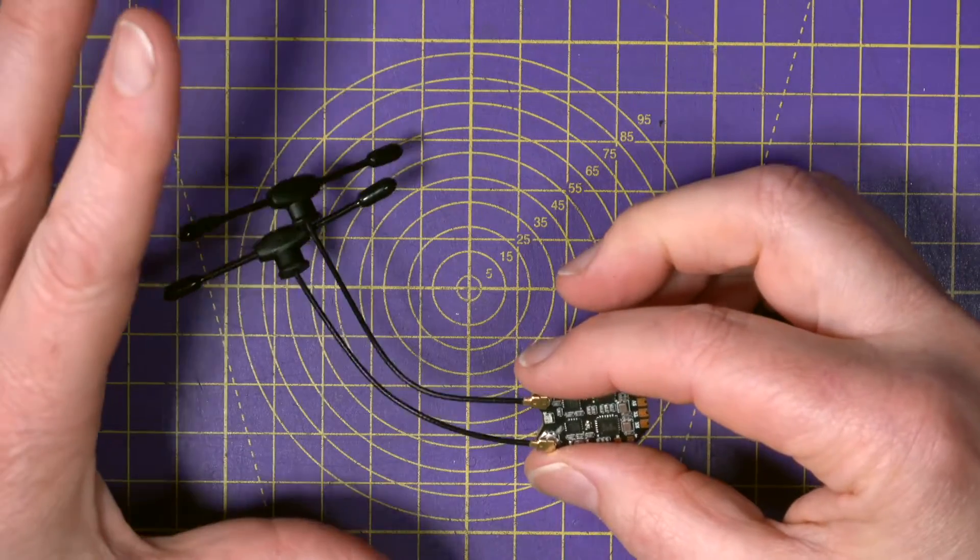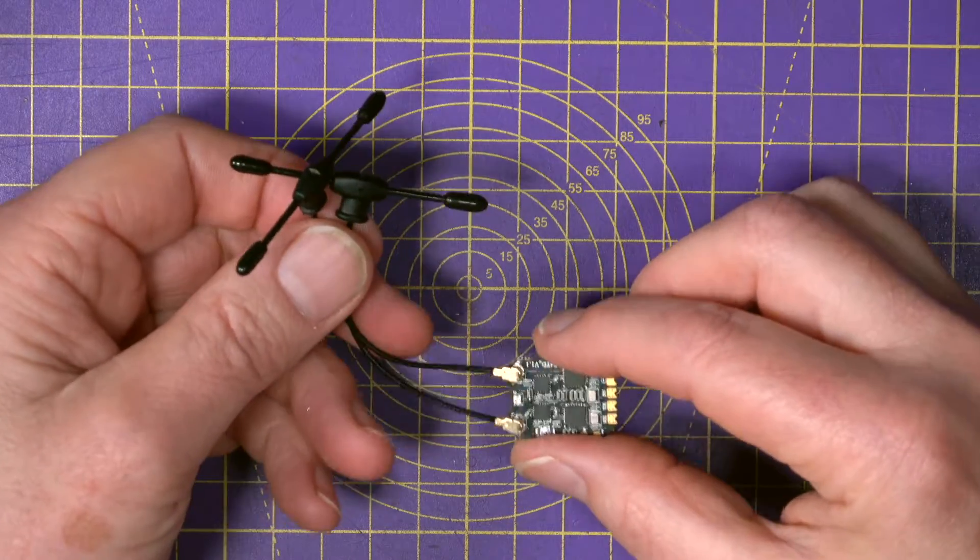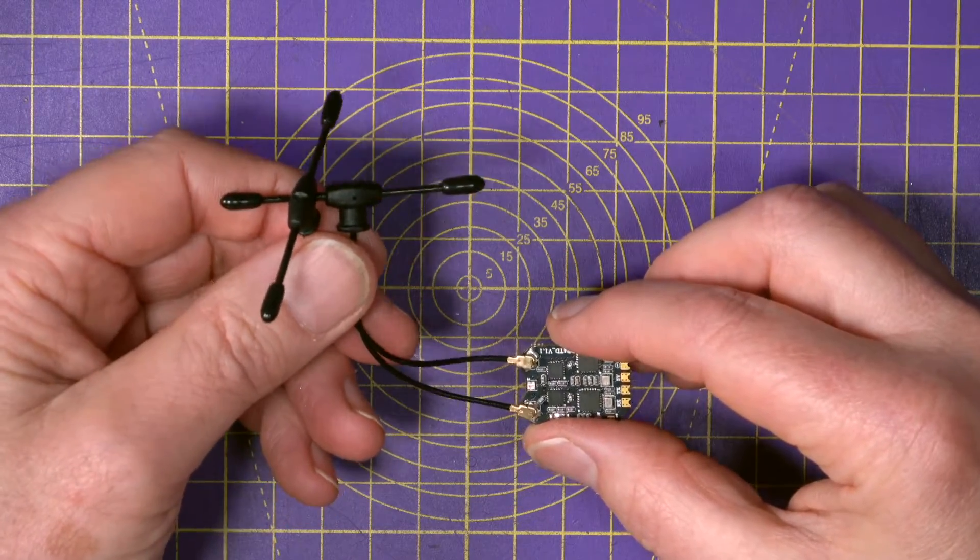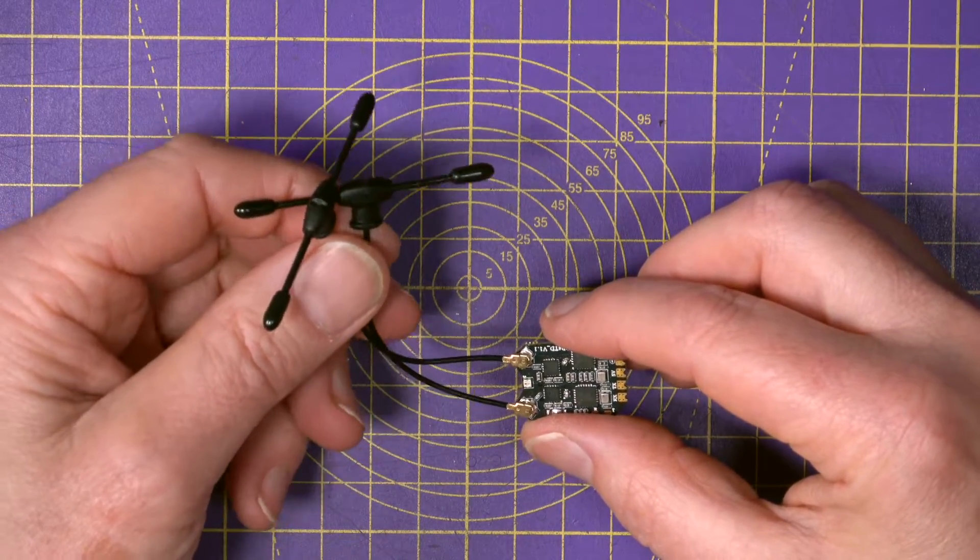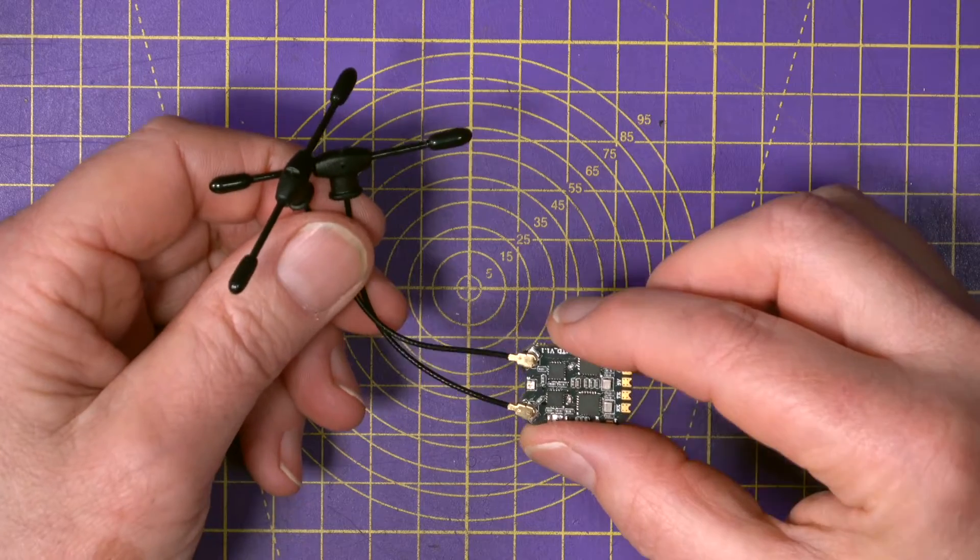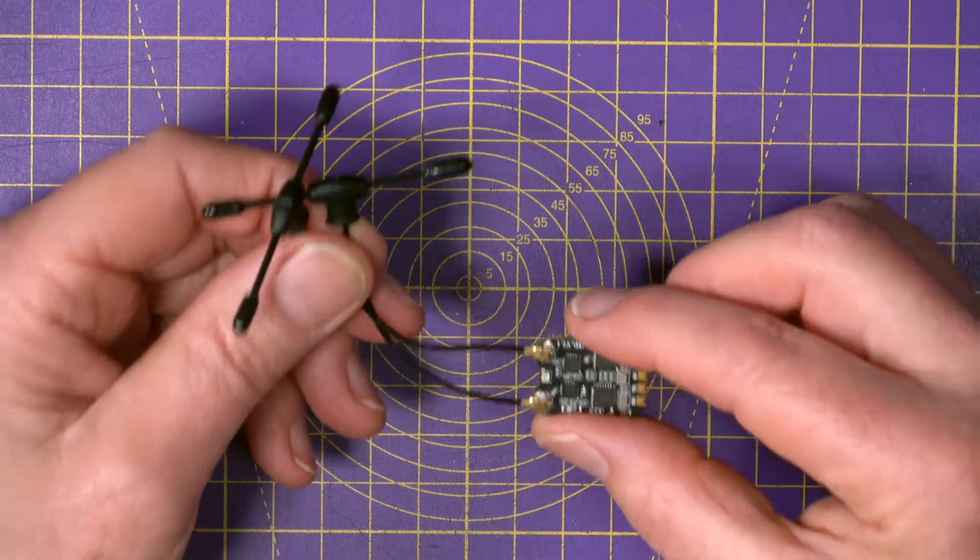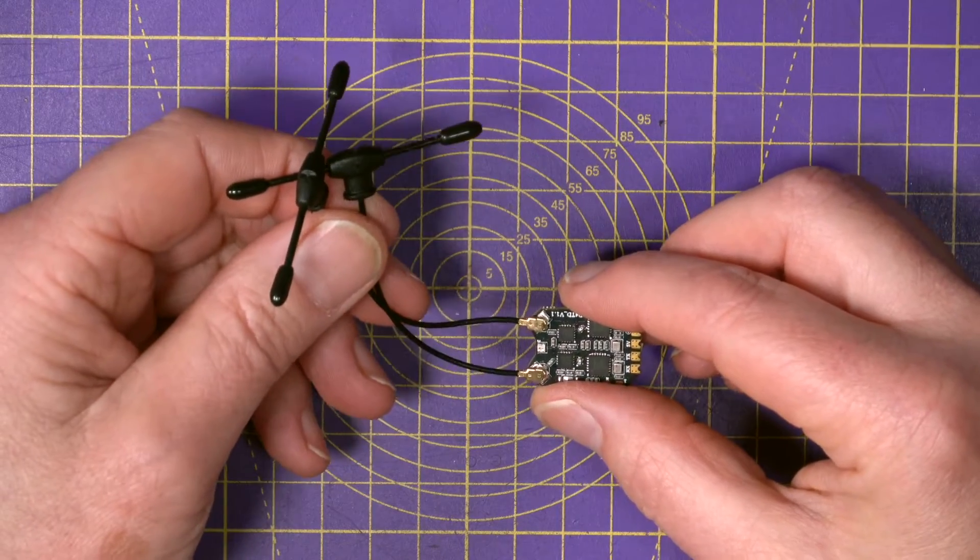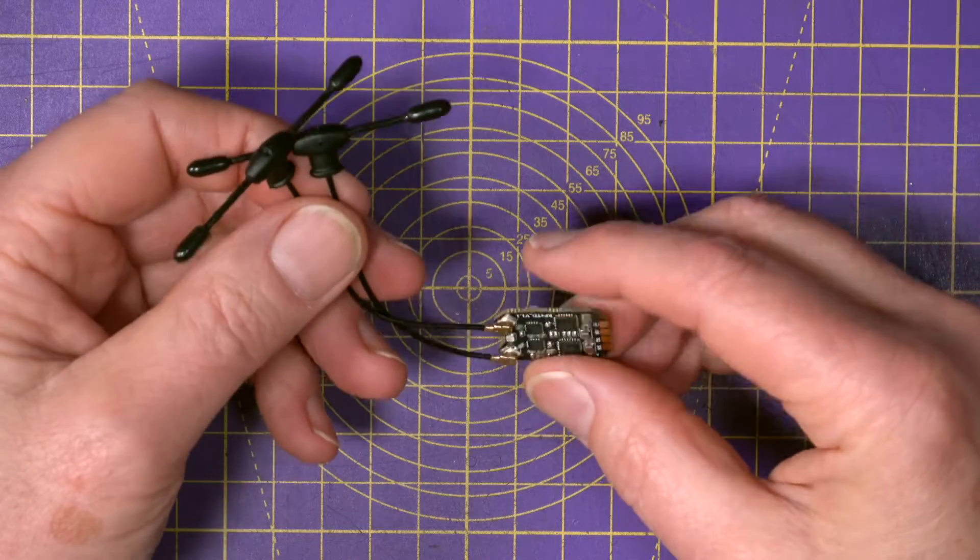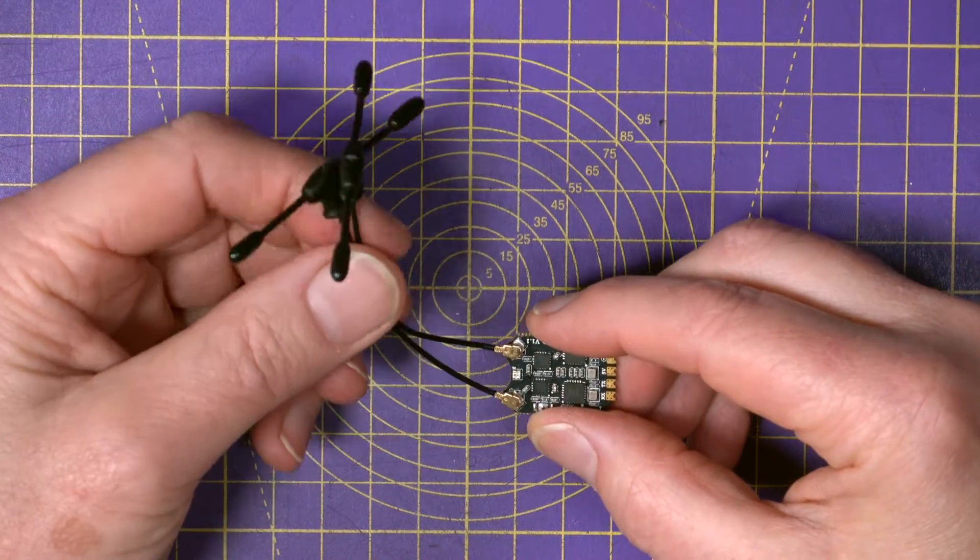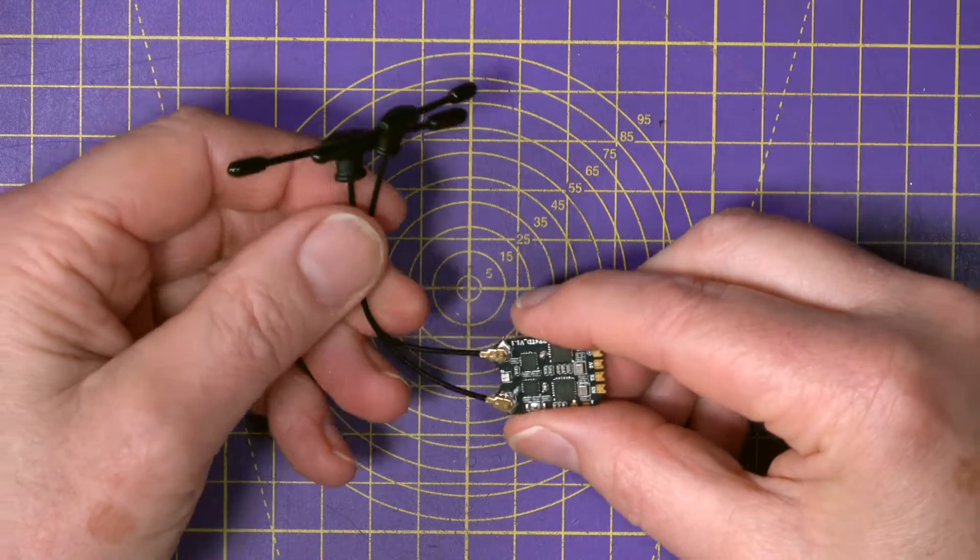I've talked about ELRS Gemini mode in previous videos and this is Gemini compatible. Obviously you'd need a Gemini mode transmitter and other than home grown solutions the only other one that I've used is from BetaFPV. And let's hope 2024 brings some Gemini mode external transmitter modules from RadioMaster. The price on this is $24.99 direct from the RadioMaster website and links are in the description below.